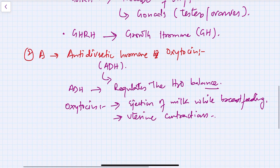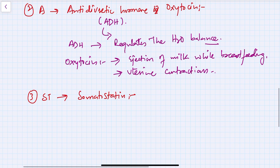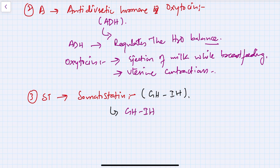The ST in HAST stands for somatostatin, also called the growth hormone inhibitory hormone, GHIH. It is an inhibitory hormone secreted from the hypothalamus. Somatostatin regulates the release of growth hormone and insulin, which controls carbohydrate and sugar metabolism in the body.